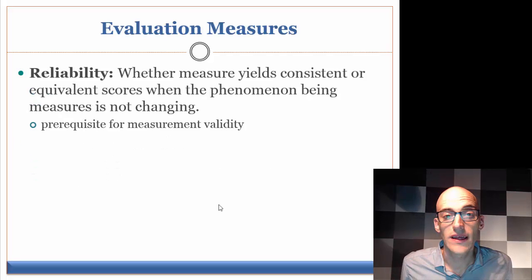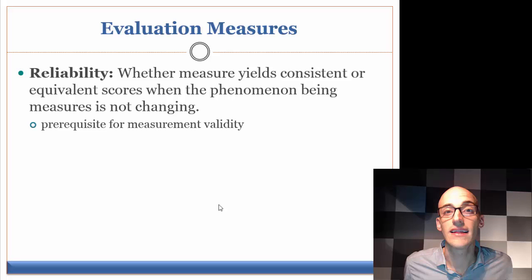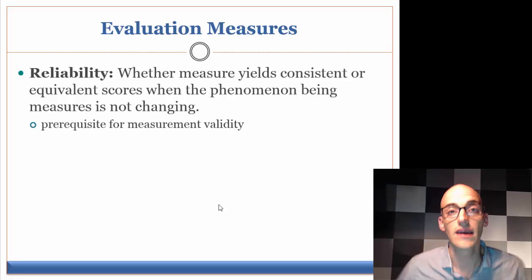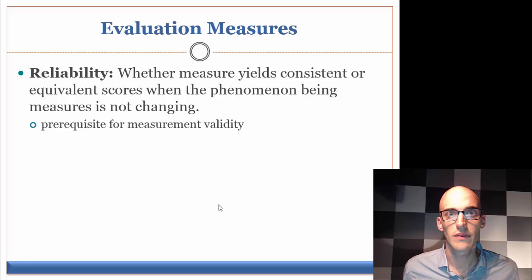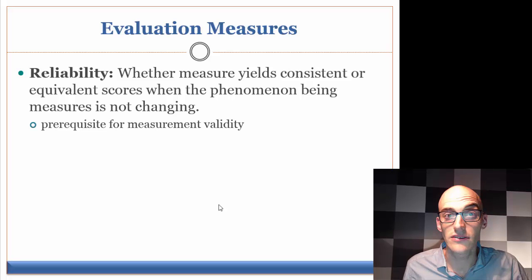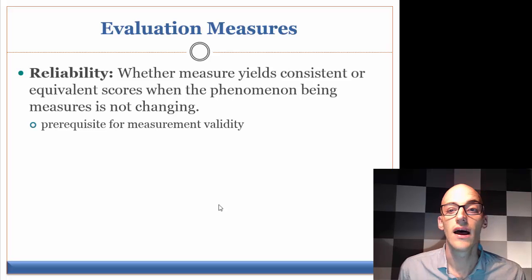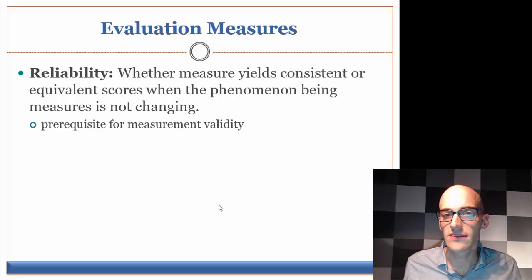Let's finish with a discussion of reliability and validity — the crux of having sound measurement. Reliability is most commonly associated with the consistency of a measure: whether the measurement tool gives you consistent results every time you use it. The typical example is the broken clock — is a broken clock ever right twice a day? Reliability is whether a tool yields consistent or equivalent scores when the phenomenon being measured is not changing. It's a prerequisite for validity. You can have a measurement tool that's reliable but not valid, but you can't have one that's valid and not reliable.